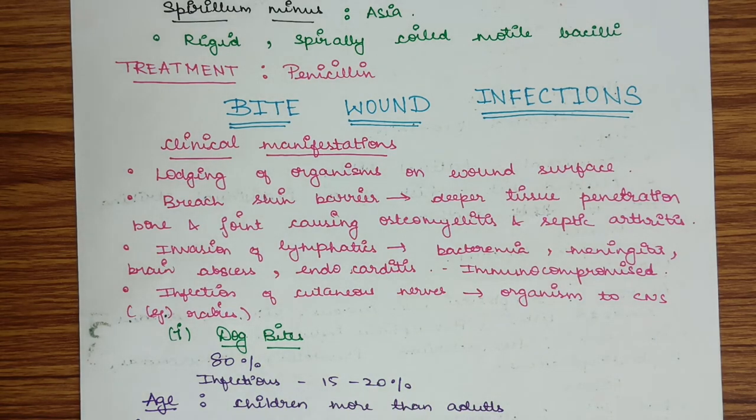Clinical manifestations of bite wound infection: lodging of organisms on wound surface or, if there is breach in skin barrier, deeper tissue penetration affecting bones and joints causing osteomyelitis and septic arthritis. If there is invasion of lymphatics, it may lead to bacteremia, meningitis, brain abscess, endocarditis in immunocompromised individuals. Infection of cutaneous nerves may lead to lodging of organisms in the CNS, for example in rabies.